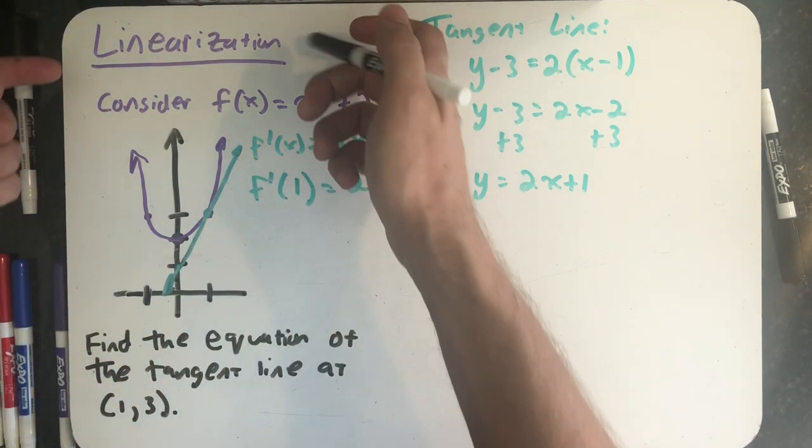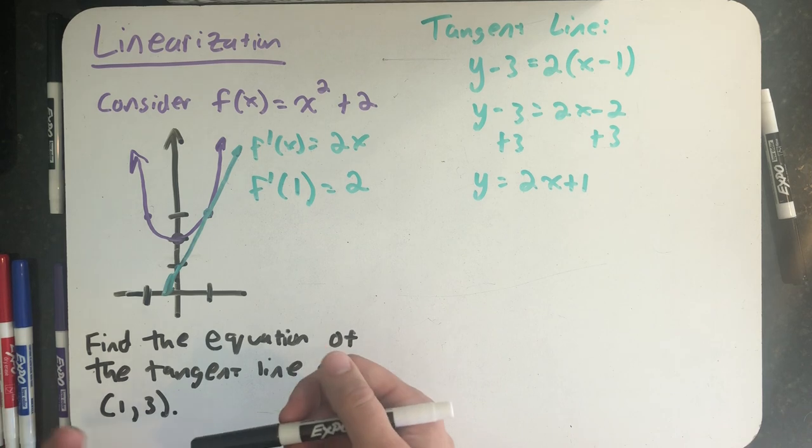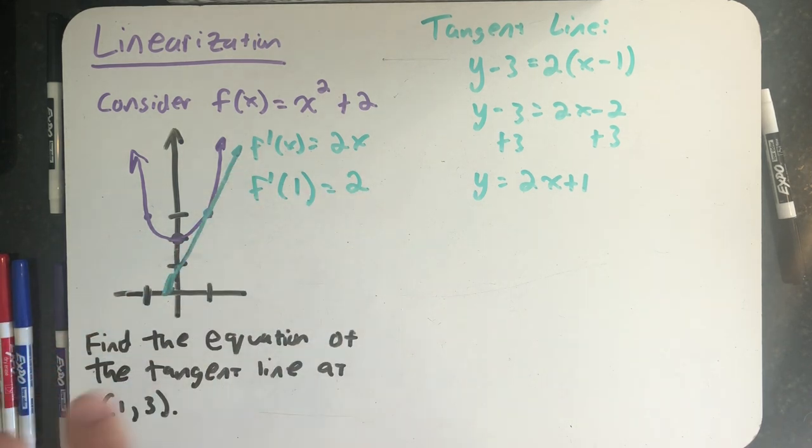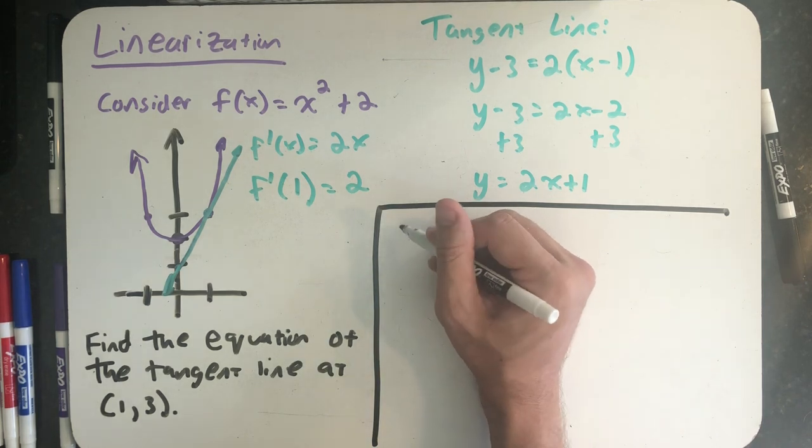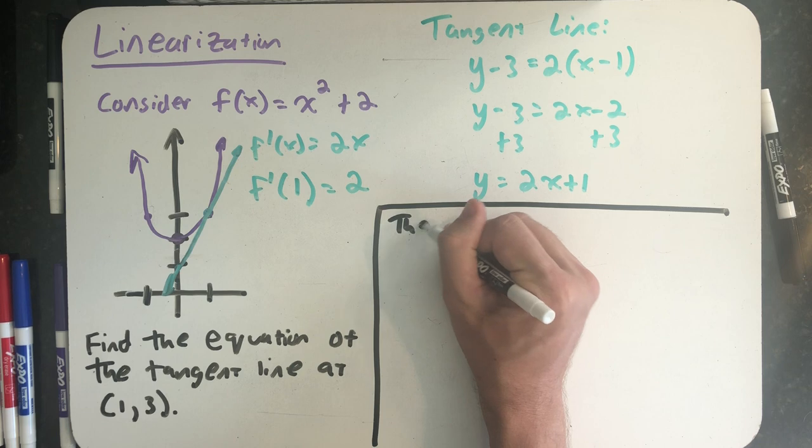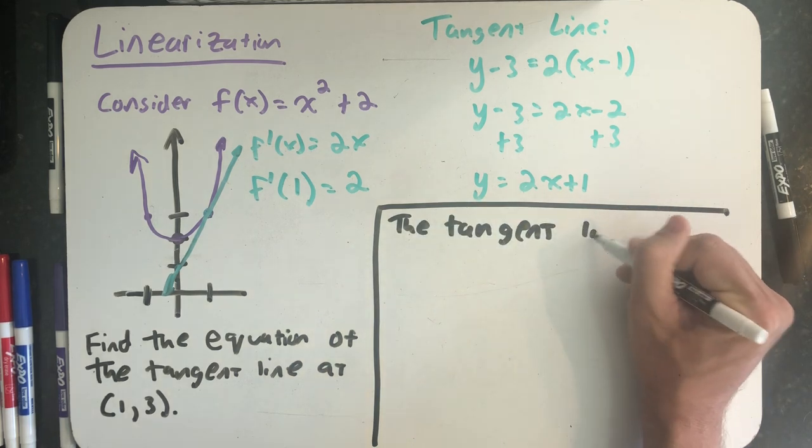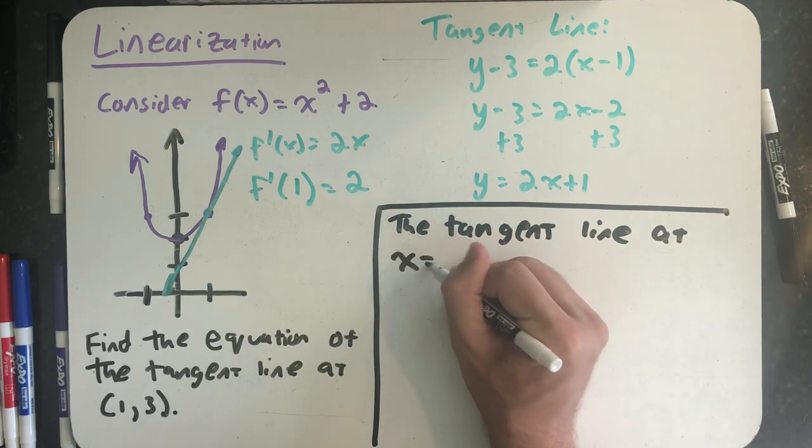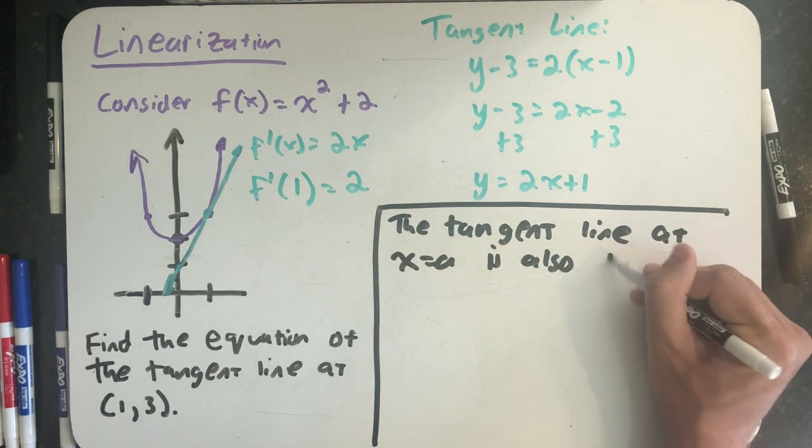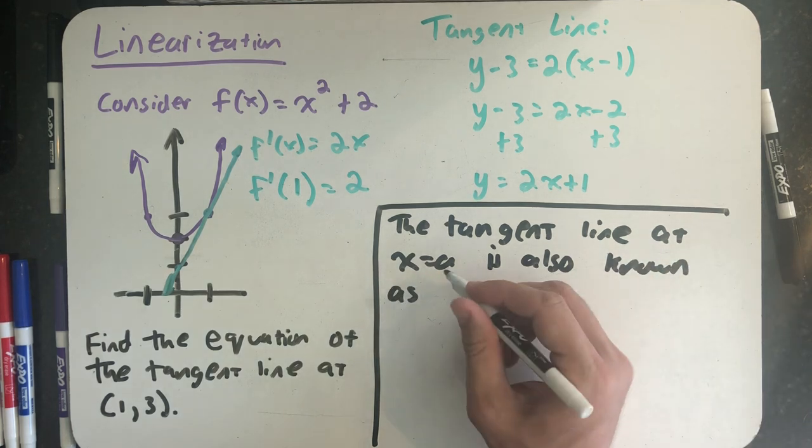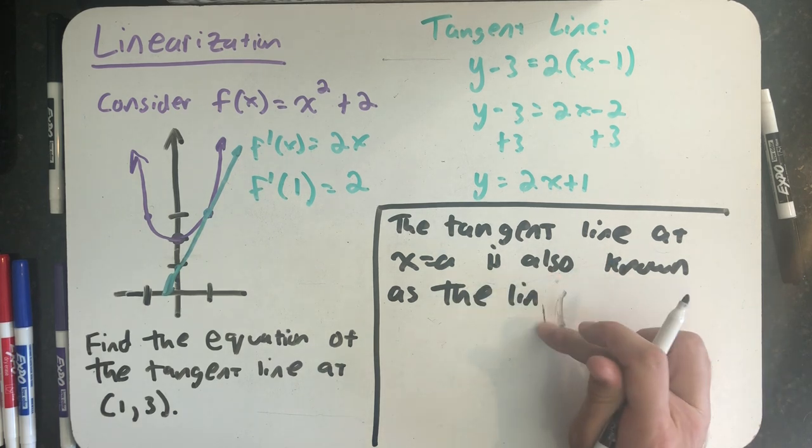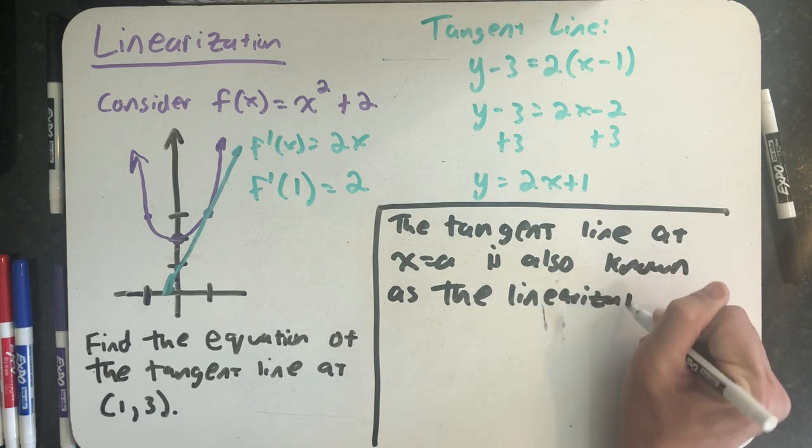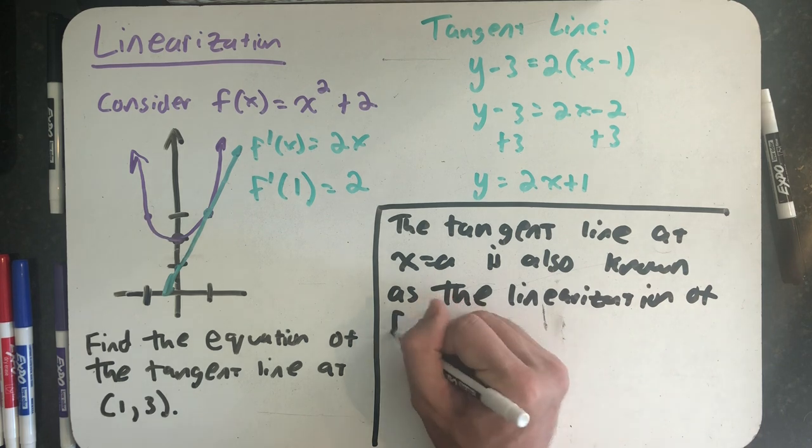In fact, that's actually what we mean by the linearization of a function at a point. At x equals 1, this line behaves a lot like the graph of y equals x squared plus 2. For that reason, the tangent line at x equals a